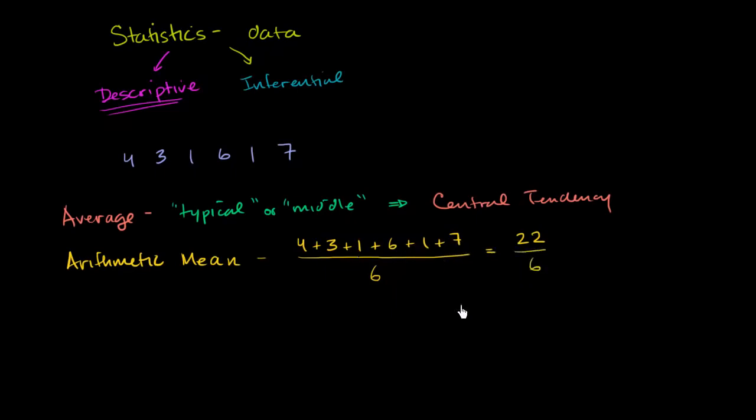All of that over 6. And we could write this as a mixed number. 6 goes into 22 three times with a remainder of 4. So it's 3 and 4/6, which is the same thing as 3 and 2/3. We could write this as a decimal with 3.6 repeating. But this is kind of a representative number. This is trying to get at a central tendency.